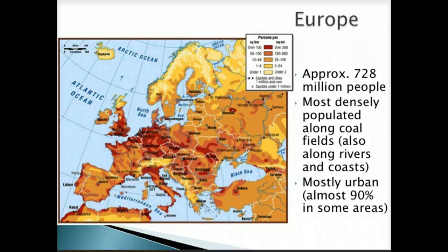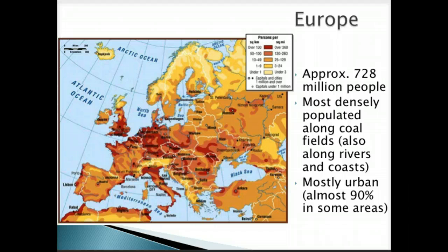Another example is Europe, the third of those populated regions, with about 728 million people — numbers that are constantly increasing. We look at where these dense populations occur: along coastal areas and rivers, but interestingly also near coal fields and urban areas. A spatial question is: why is that? This is a product of the Industrial Revolution, which had a profound impact not only on human population but on economic development in global history.